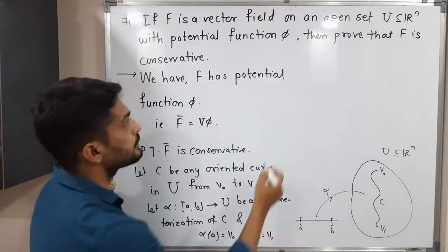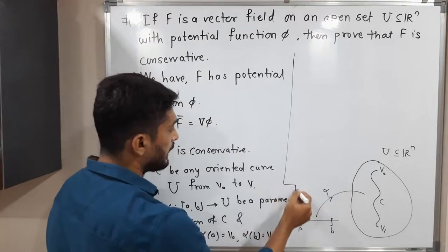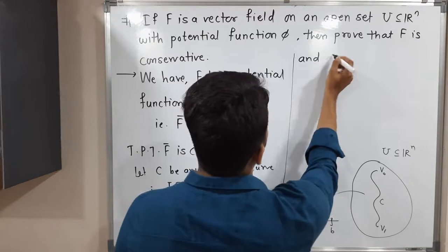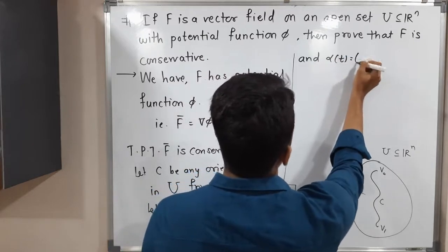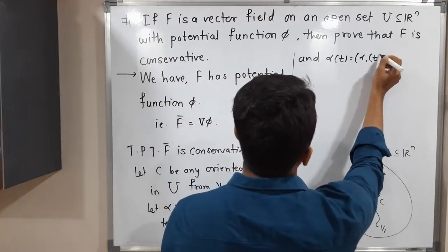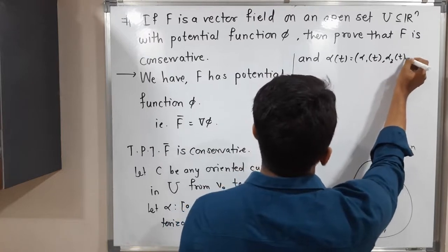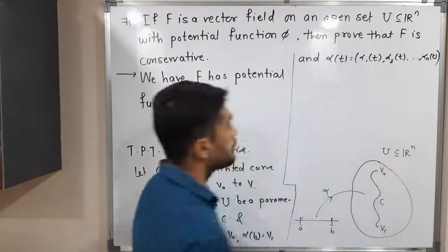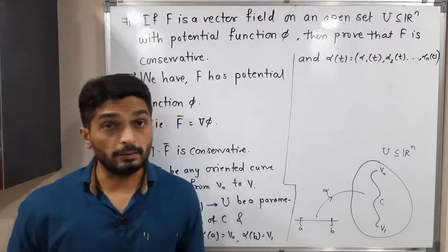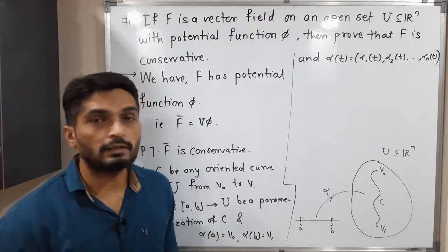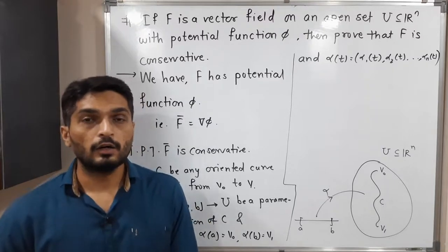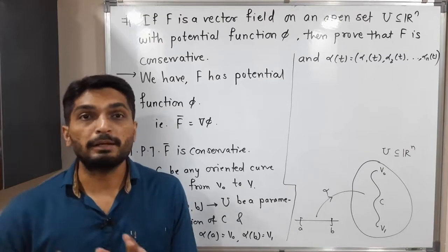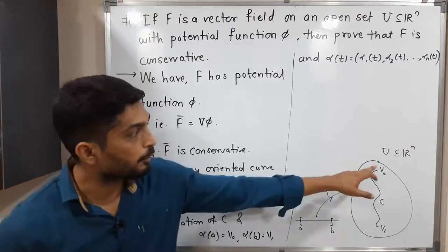Alpha is defined on the closed interval [a, b] which is a subset of R. We also write alpha(t) with n components: alpha₁(t), alpha₂(t), and so on up to alphaₙ(t). So we have considered any curve C from v₀ to v₁ with parameterization alpha, and we need to prove the line integral of f over C is independent of C and depends only on the endpoints v₀ and v₁.